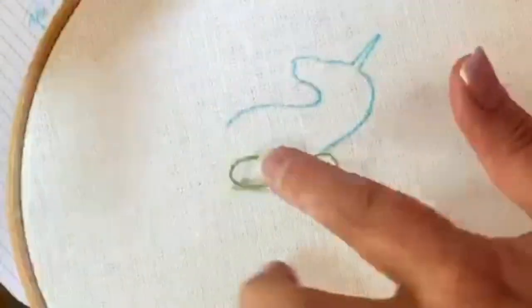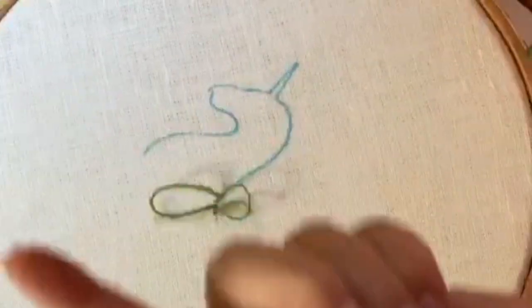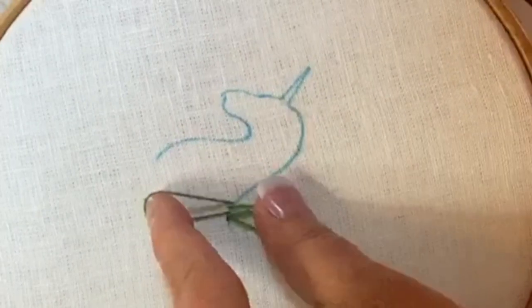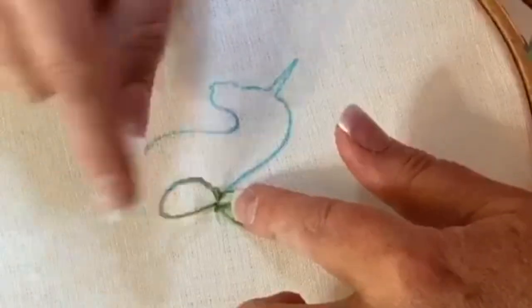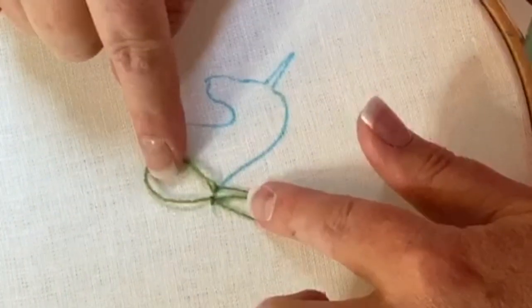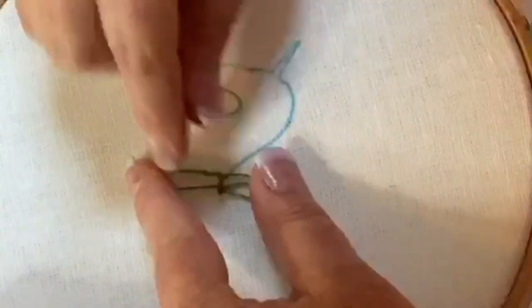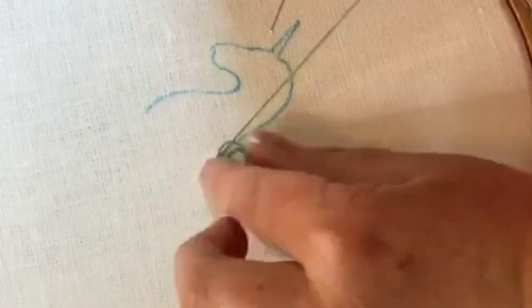Now the reason why we're holding this loop up is because we're going to come back up in B again but we've got to be able to get to that hole and if this is pulled down tight then you can't so you just leave those two loops a loop at the bottom and a loop at the top and then once you're in that then you can pull that one tight.